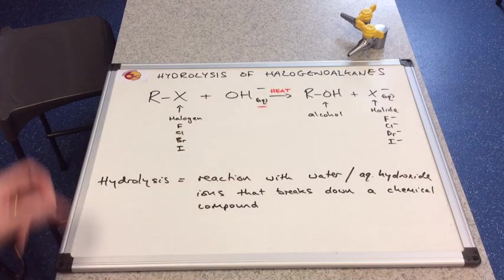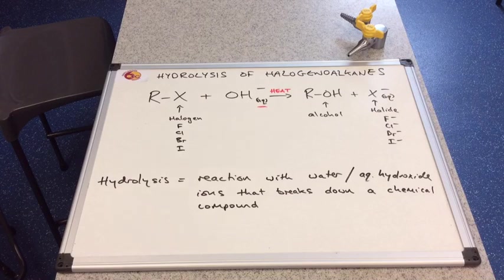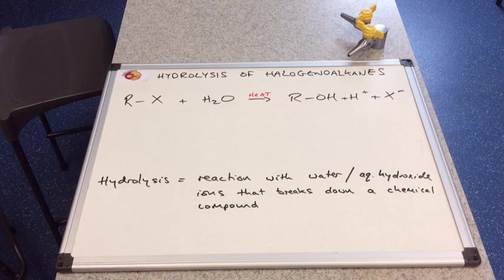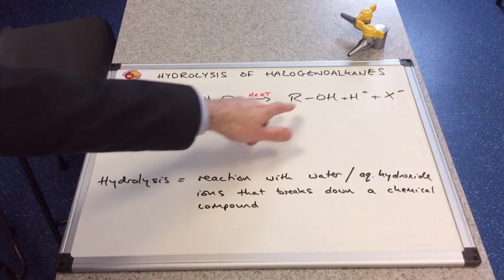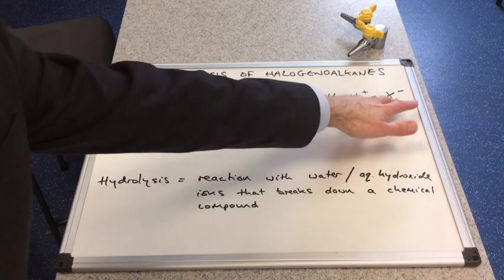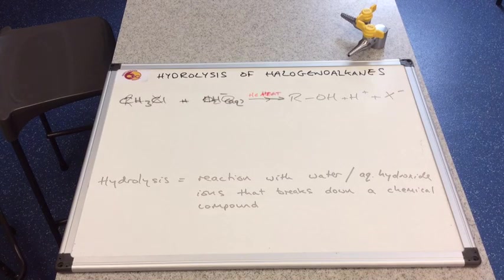Chlorine in the halogenoalkane would give chloride and so on. So you can see that these aqueous hydroxide ions have broken this halogenoalkane down and actually converted it to an alcohol. And there's the equation in general form for water hydrolysis using water. And you can see you also get an alcohol formed, you also get the halide ion formed, but you can see there you also get an H+ ion.